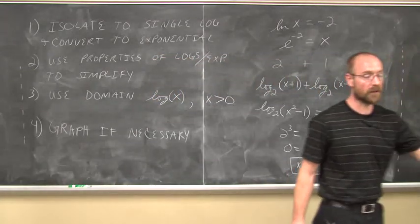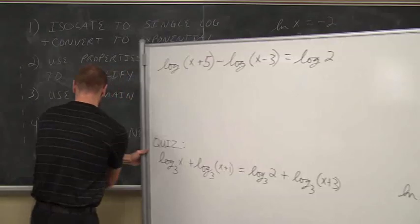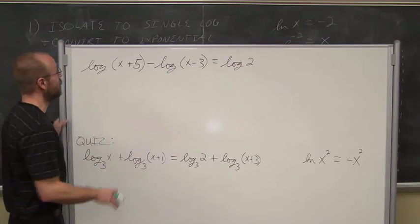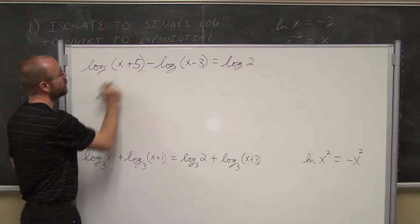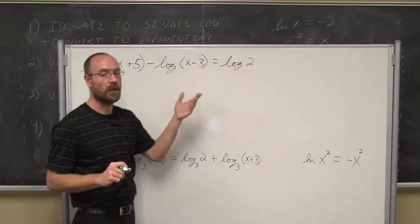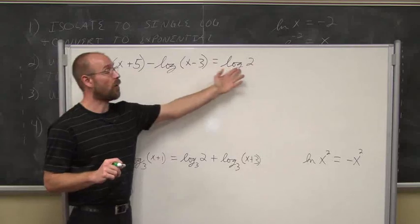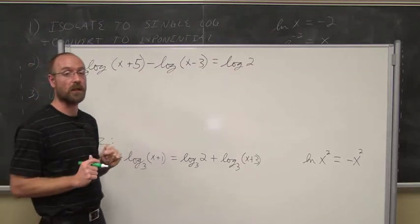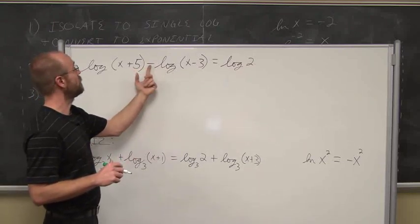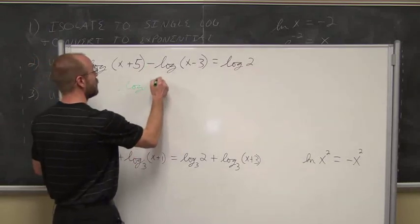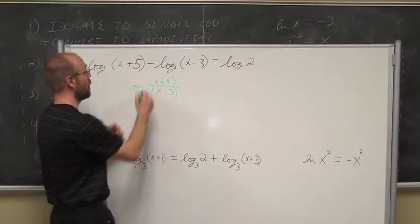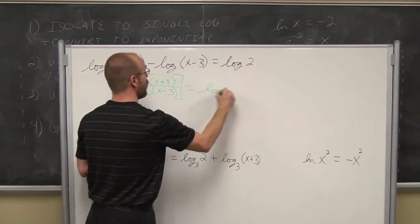Let's look at a couple more examples. The first thing is we have log of the quantity x plus 5 minus log of the quantity x minus 3 equals log of 2. I identify that these all have the same base, and that base isn't written, so I have to assume they're common logs, base 10. So what I'm going to do is I'm going to use the properties of logs to say, well, if I have the difference of logs, I can write it as log of x plus 5 over x minus 3. So the log of this quantity equals log of 2.